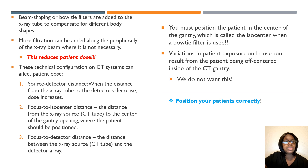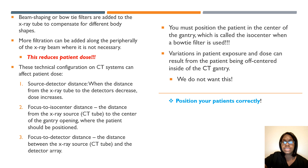The filters used in CT include beam shaping or bowtie filters, which are added to the x-ray tube to compensate for different body shapes. More filtration reduces the patient dose. Factors that affect patient dose include source-detector distance, focus to iso-center distance, and focus to detector distance. Position your patients correctly, because if they are not centered inside the CT gantry correctly, this can increase patient dose.